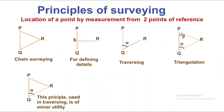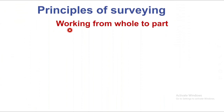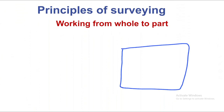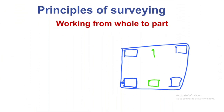The first principle is the location of a point by measurement from two points of reference. The second principle is working from whole to part. Suppose I have a survey of this plot. I am working from the whole — from the main control columns — and then working toward the intermediate columns, from center to center.